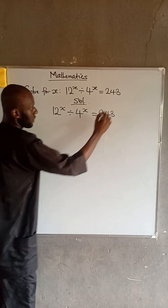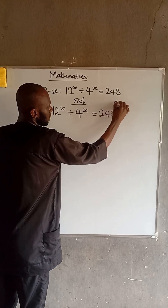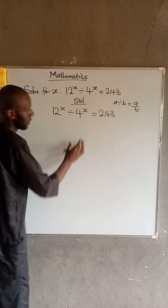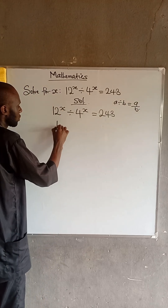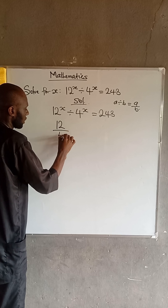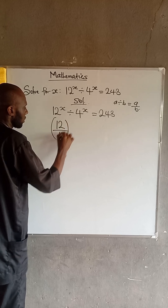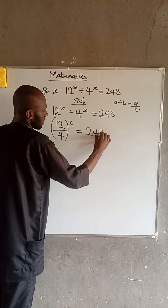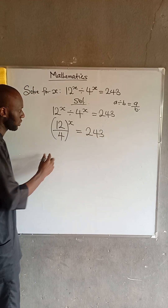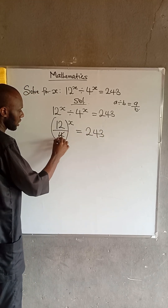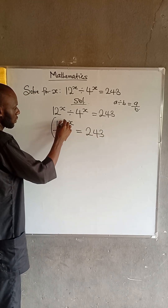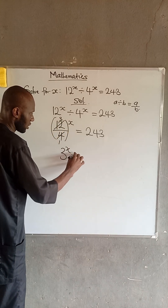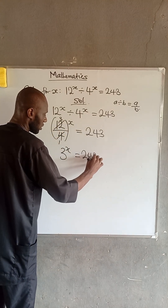Recall that if I have a divided by b, all to the power of x, this is equal to a over b, all to the power of x. So the left-hand side becomes 27 divided by 4, all to the power of x, equal to 243. At this point, we know that if 4 cancels, we have 1 on top and 3 on the bottom — wait, simplifying gives us 3 to the power of x equal to 243.